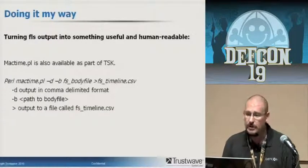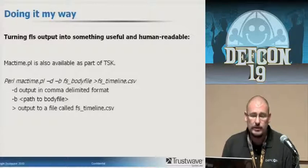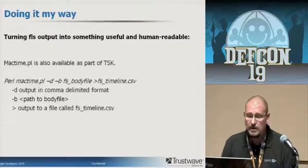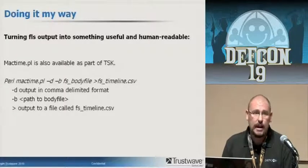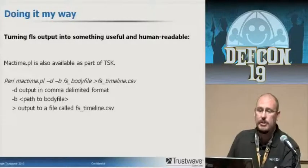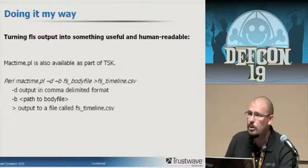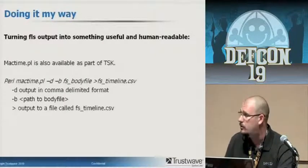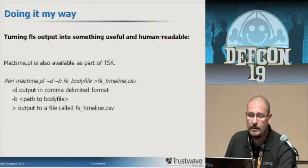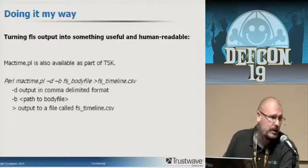Turning FLS output into something actually useful and human-readable is done with the MacTime Perl script, also available as part of the Sleuth Kit. The sample command: perl mactime.pl -D -B — point it at your body file and output to a CSV file. Dash D outputs in comma-delimited format, so it's really easy to use with Excel, OpenOffice, or command line. Dash B designates your path to the body file. You're outputting it to a timeline — FS timeline.